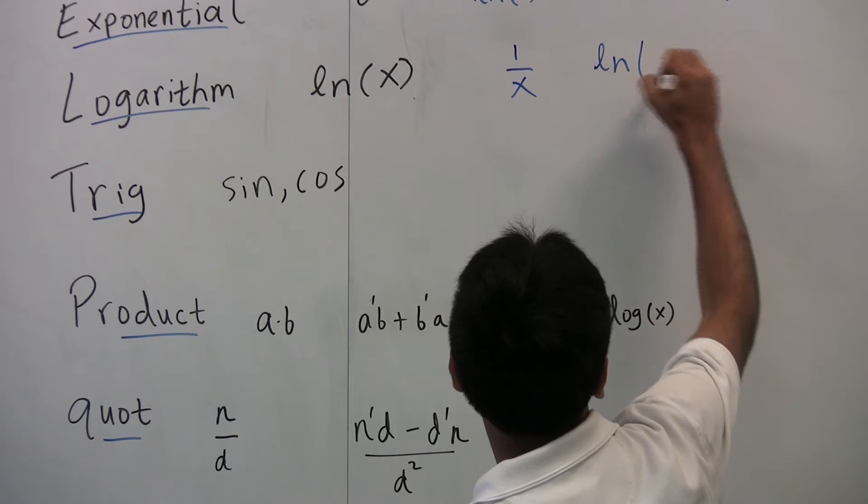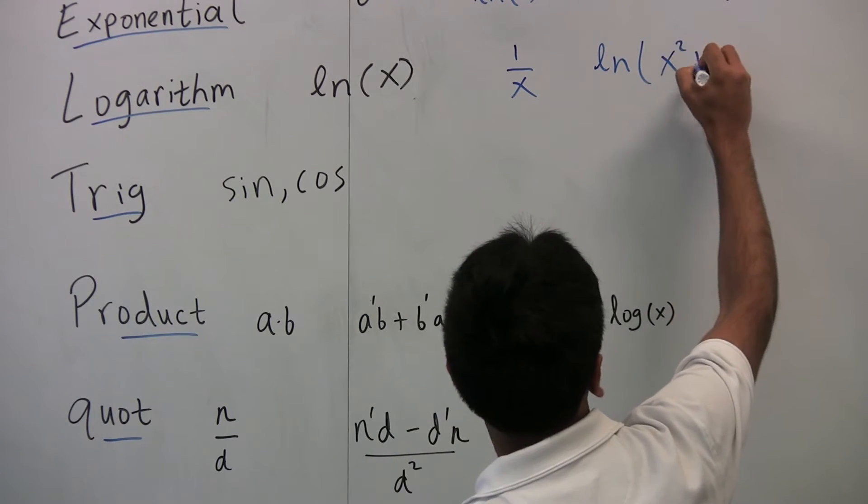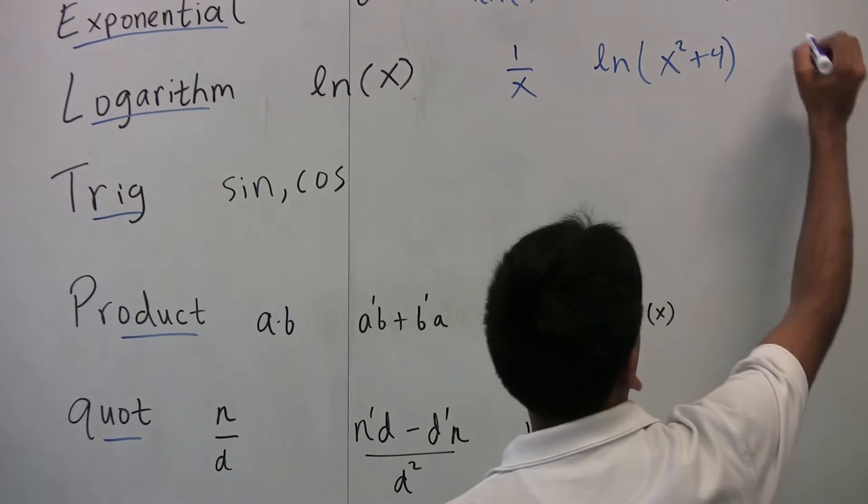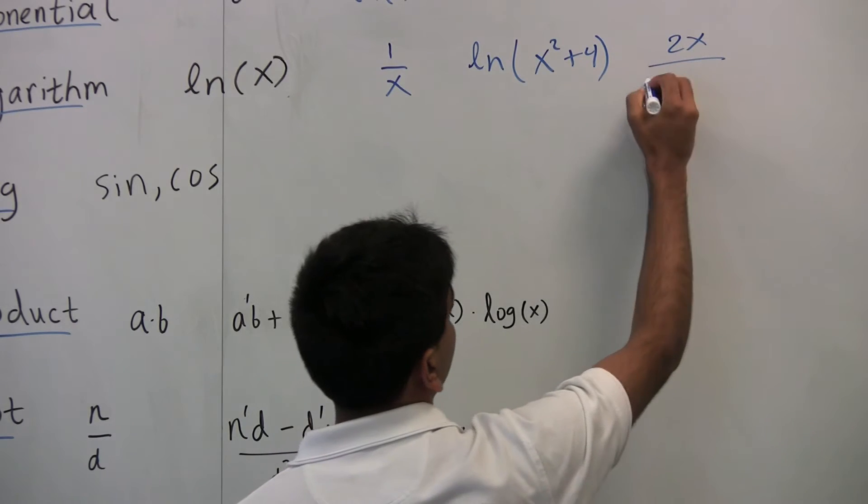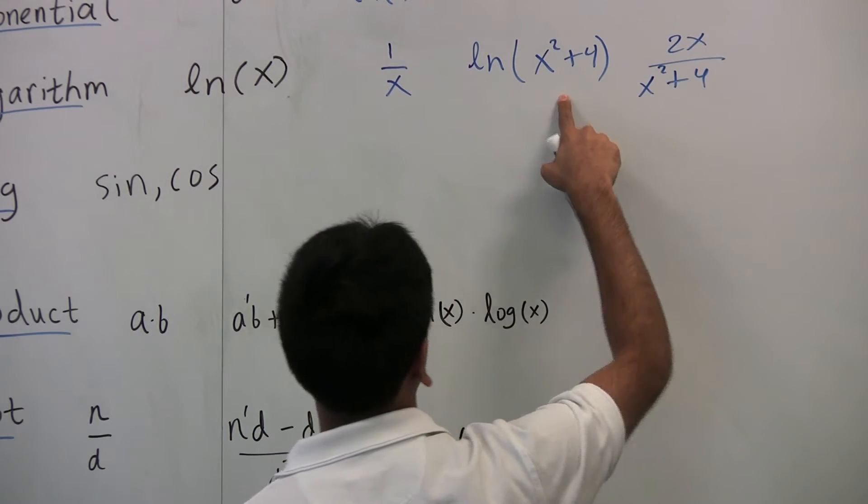So the derivative of ln of x squared plus 4 is 2x, because that's the derivative of this guy, over x squared plus 4, because that's what this guy is.